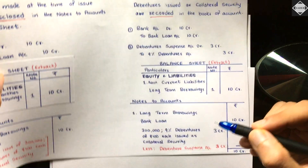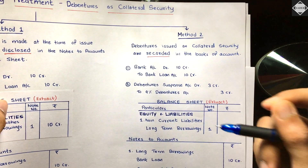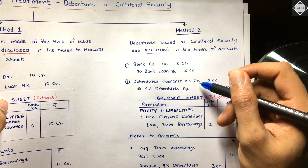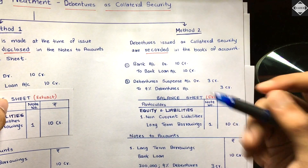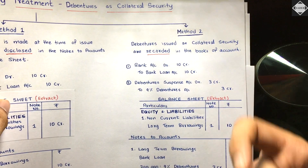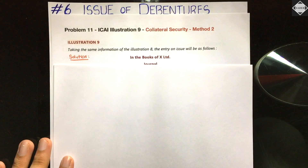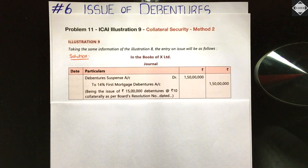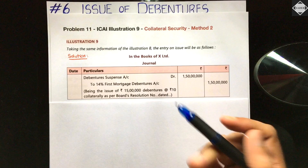Since the Debenture Suspense Account has been debited and we are not cancelling it in the CA Foundation syllabus, this account has a debit balance. It has to appear in the balance sheet as an asset — specifically shown under Other Non-Current Assets. The journal entry: Debenture Suspense Account debit to 14% First Mortgage Debentures — 1 crore 50 lakhs. That's 15 lakh debentures issued at rupees 10 each.